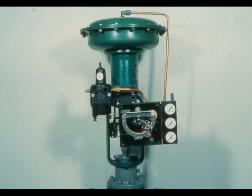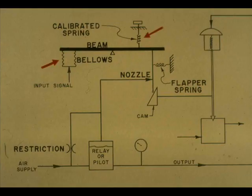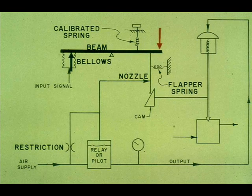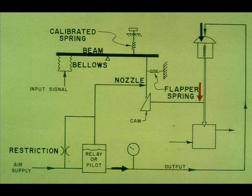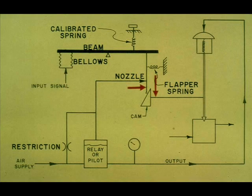In the motion balance positioner, the valve stem movement acts through directly connected mechanical mechanisms to restore a flapper nozzle relationship. The force created by the pressure in the input bellows is opposed by a calibrated spring. An increase in signal pressure in the bellows causes the right end of the beam to move downward. This causes the flapper to slide along the cam and cover the nozzle. Increased output air pressure from the relay causes the valve stem to move downward.